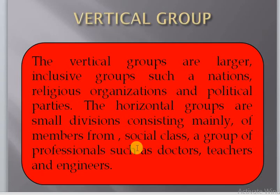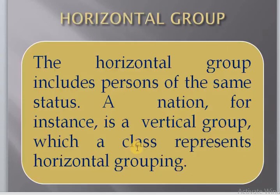Horizontal groups are small divisions consisting mainly of members from the same social class — a group of professionals such as doctors, teachers, and engineers. The horizontal group includes persons of the same status. A nation, for instance, is a vertical group, while a class represents the horizontal group.